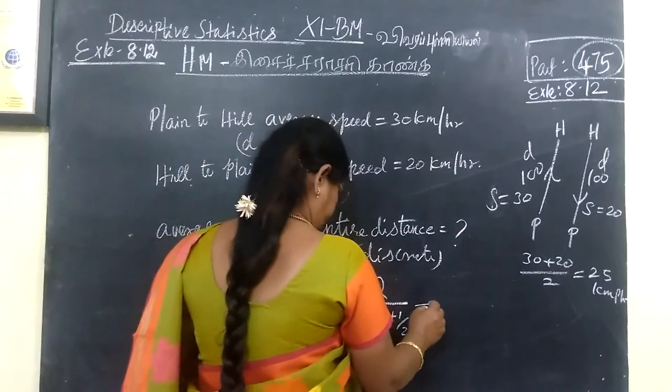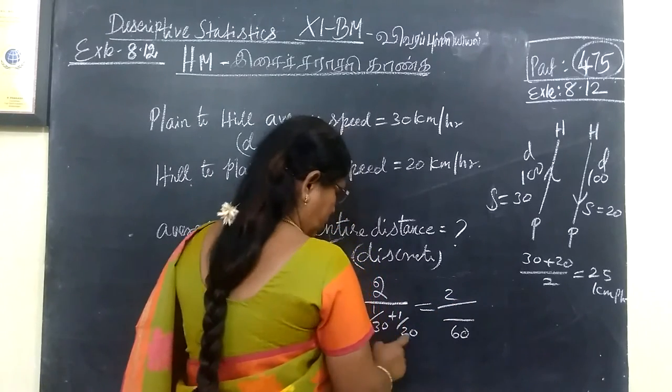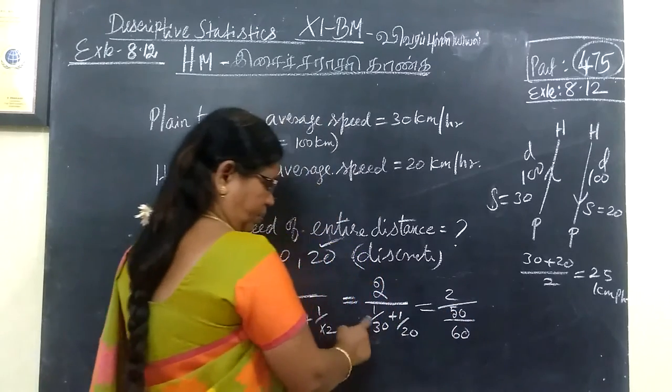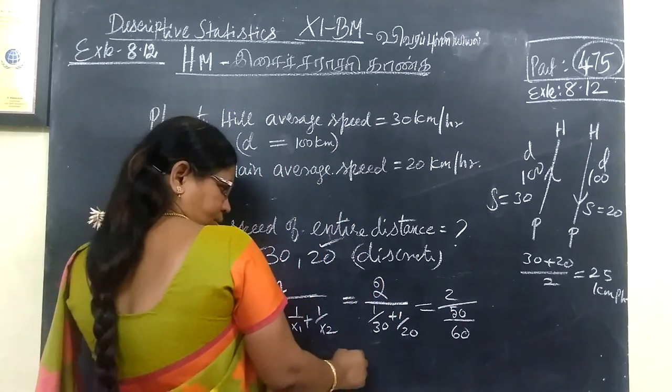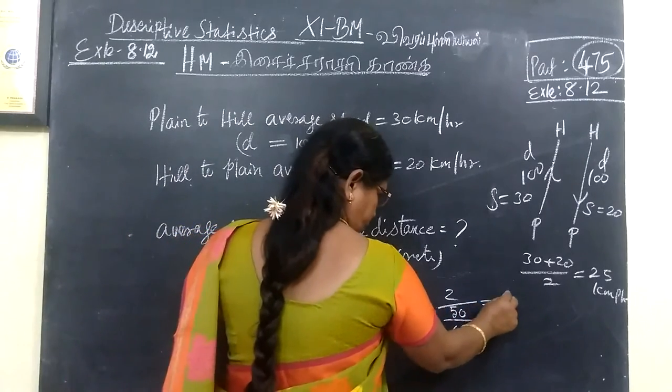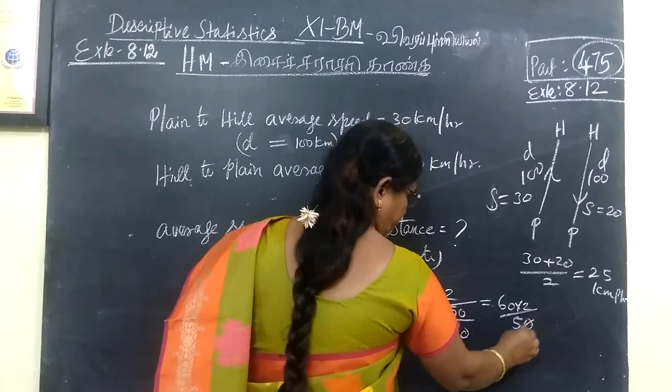Equal to 2 by, this is LCM. What is the value? 60. So cross multiply by 60. This is 20, this is 30. That is equal to 60 into 2 by 50.